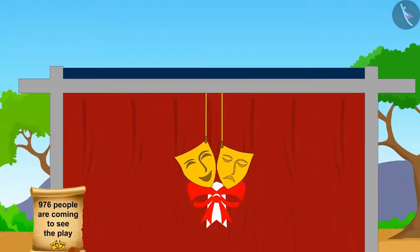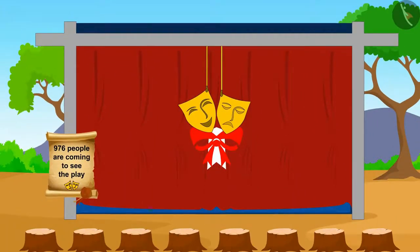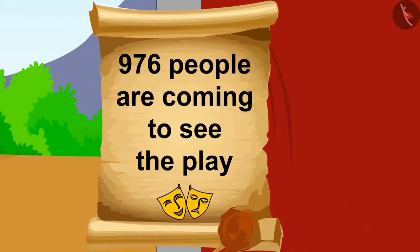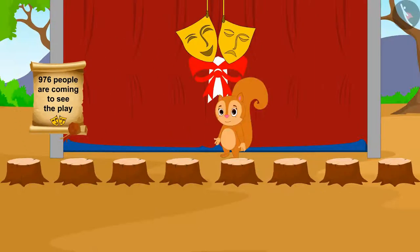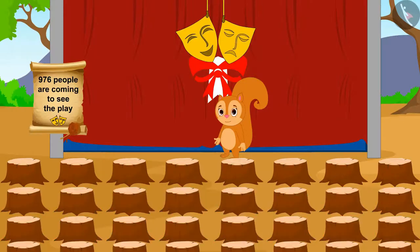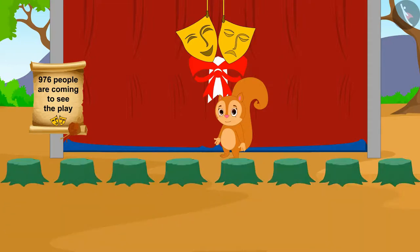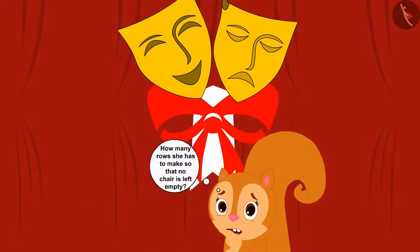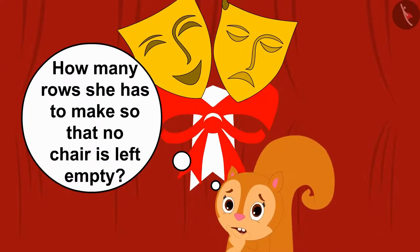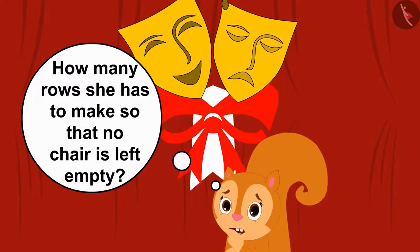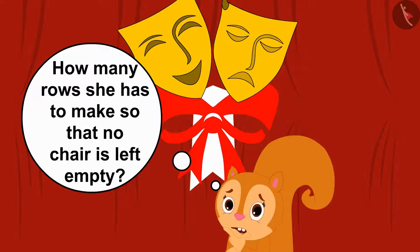A stage play is going to be held in Champapur's fair. 976 people are coming to see the play. For the audience to come in the play, Chanda has to set up chairs in such a way that there are eight chairs in each row. She is thinking how many rows she has to make so that no chair is left empty.